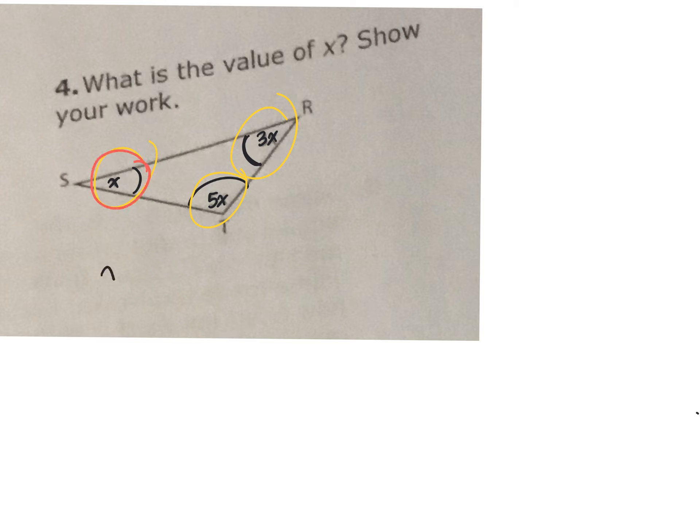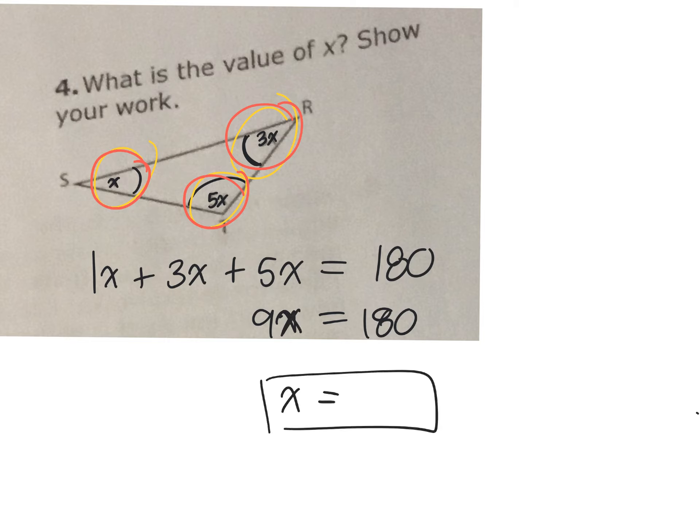So would you agree that X plus 3X plus 5X, if I add them all together, what does it equal? 180. If I have 1X and I have a 3X and I have a 5X, how many X's do I have? We have 9X's. That equals 180. How do I isolate to solve for X? Divide by 9. If I divide the left side by 9, what do I have to do to the right side? What's 180 divided by 9? 20. So X equals 20.